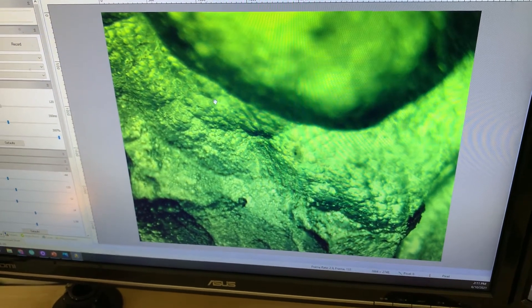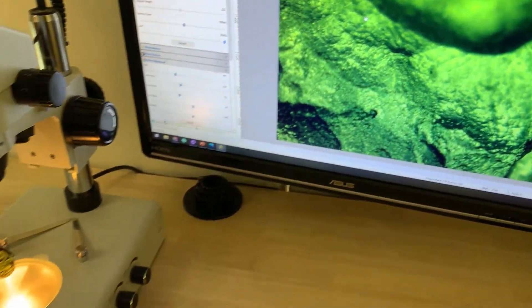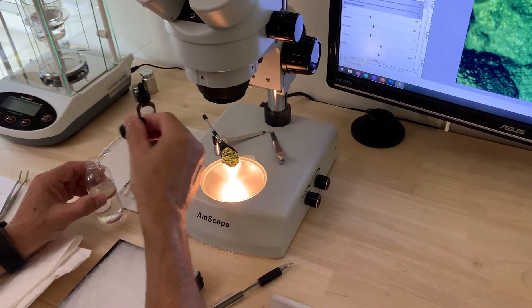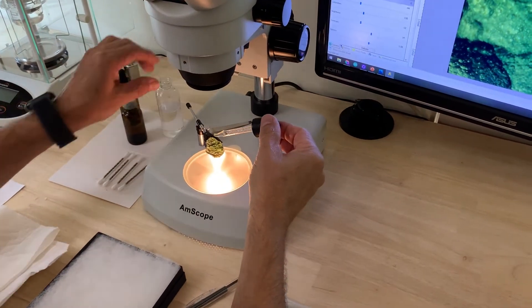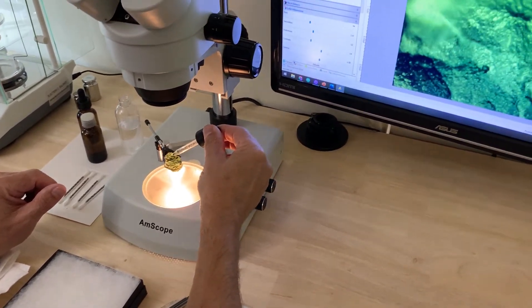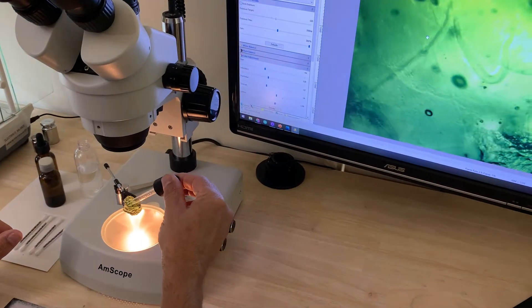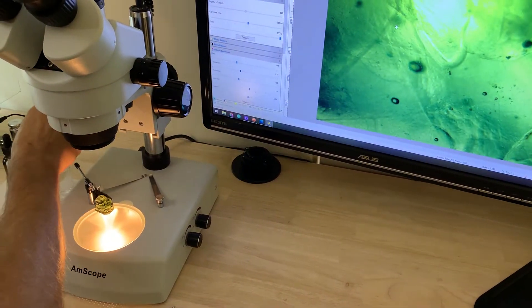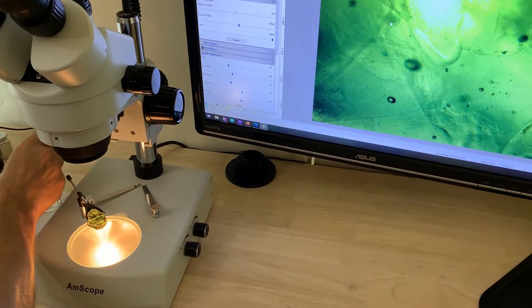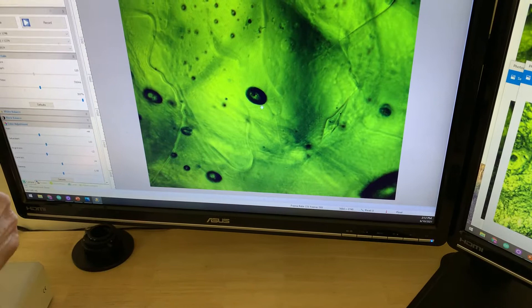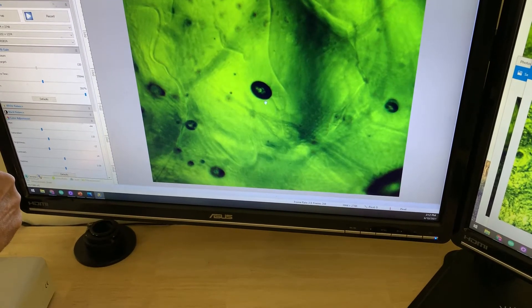We take a refractive index fluid that has a refractive index very similar to moldavite, which is about 1.5 to 1.55, right in that range. We put it on there, and that refractive index allows us to wash the texture out a little so I can get a crisper view of what's actually inside the moldavite. I'm actually focusing in through the moldavite.